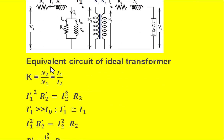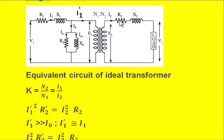In the ideal equivalent circuit, the turns ratio is written as N2 by N1, which is also equal to I1 by I2. To transfer the secondary parameters R2 and X2 from the secondary to the primary side, there must be some basis. To transfer R2 to the primary side, the copper loss in R2 when drawing I2 must equal the copper loss when it draws I1 dash, represented as I2 squared times R2.